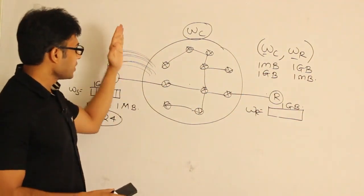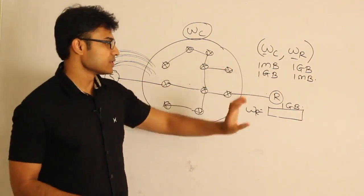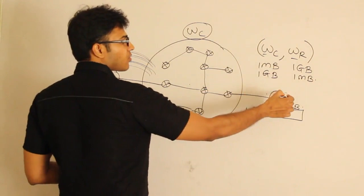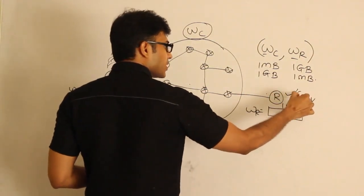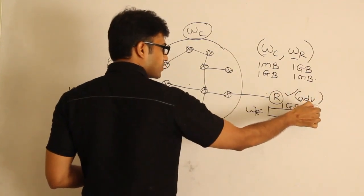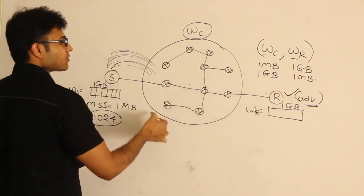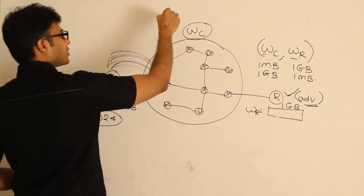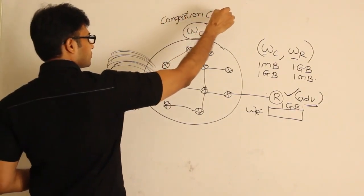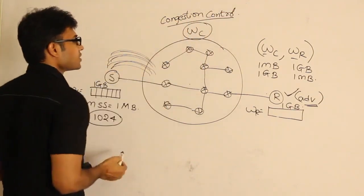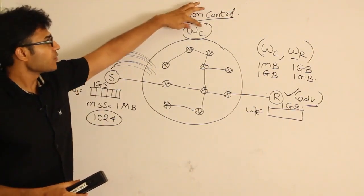We want to stop the traffic so that the network is safe and the receiver is safe. To take care of the receiver, we use flow control and the advertisement window field in our packet — that is called flow control. To protect the network, we need congestion control. Congestion control is used to protect the network from having data dumped onto it.